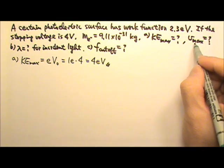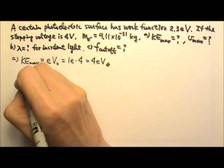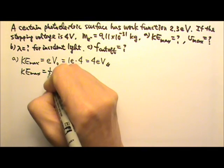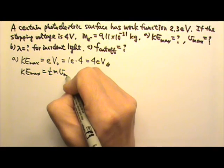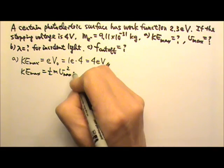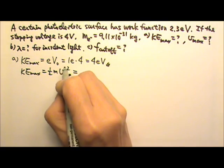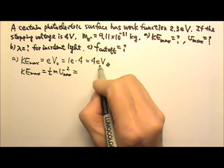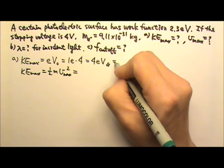To find the speed, use maximum kinetic energy = ½mvmax². If I want speed in standard units, I need maximum kinetic energy in standard units instead of electron volts, which is not the standard unit.